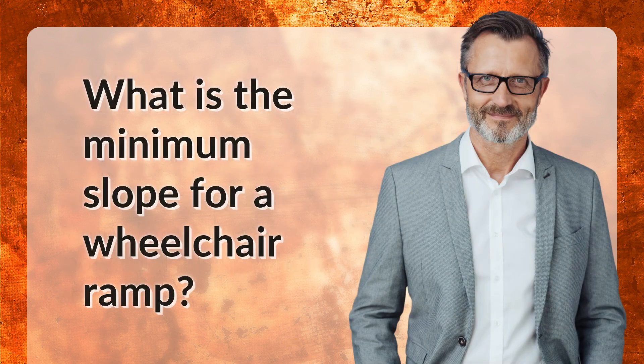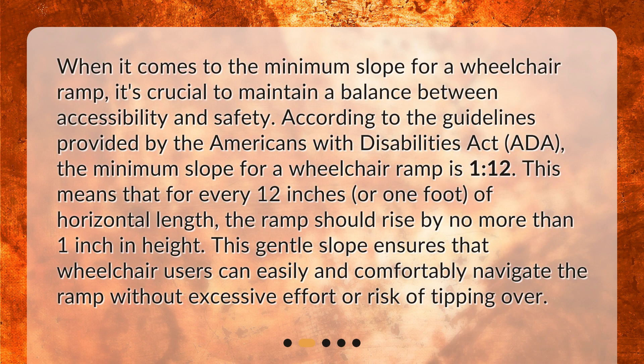What is the minimum slope for a wheelchair ramp? When it comes to the minimum slope for a wheelchair ramp, it's crucial to maintain a balance between accessibility and safety. According to the guidelines provided by the Americans with Disabilities Act, the minimum slope for a wheelchair ramp is 1:12. This means that for every 12 inches, or 1 foot of horizontal length, the ramp should rise by no more than 1 inch in height. This gentle slope ensures that wheelchair users can easily and comfortably navigate the ramp without excessive effort or risk of tipping over.